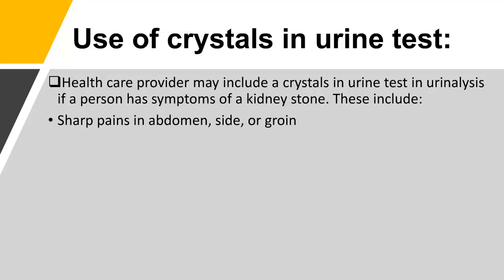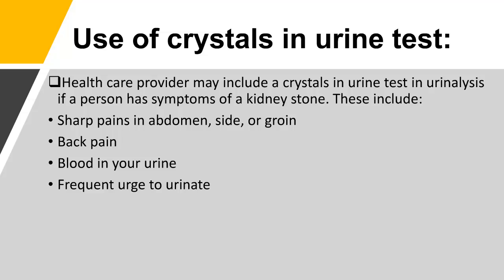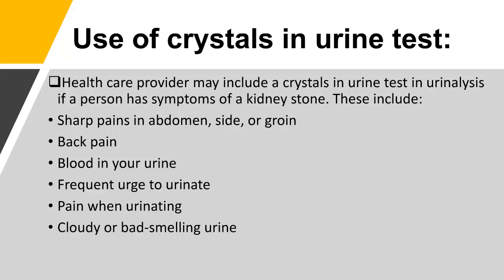Symptoms of a kidney stone include: sharp pains in the abdomen, side, or groin; back pain; blood in your urine; frequent urge to urinate; pain when urinating; cloudy or bad-smelling urine; and nausea and vomiting.